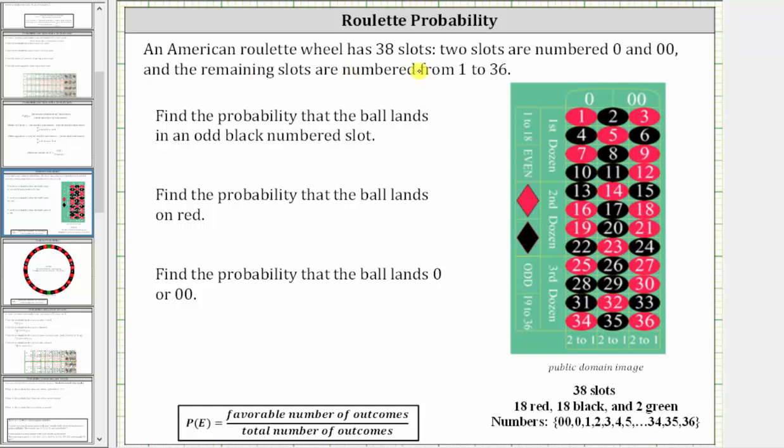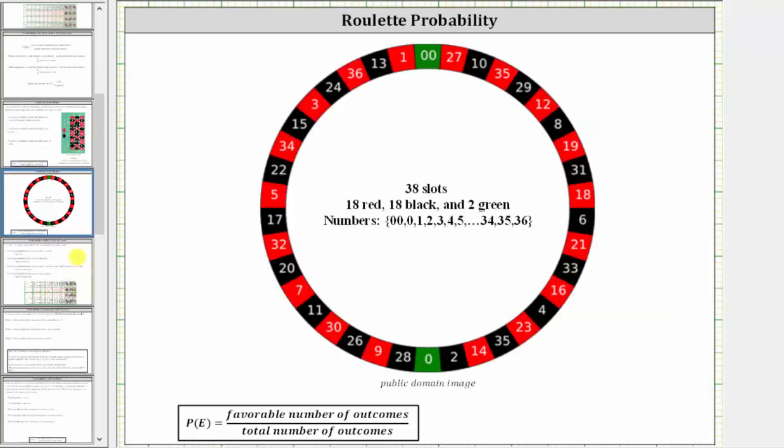An American roulette wheel has 38 slots. Two slots are numbered zero and double zero, and the remaining slots are numbered from one through 36. A roulette wheel looks more like this, where again there are 38 slots, 18 are red, 18 are black, and two are green.